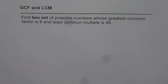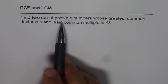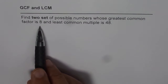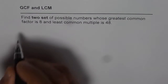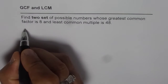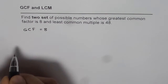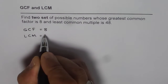Greatest common factor and least common multiple. In this video we will try to understand the relation between these two. Find two sets of possible numbers whose greatest common factor is 8 and least common multiple is 48. So what we are given here is that the greatest common factor is 8 and least common multiple is 48.